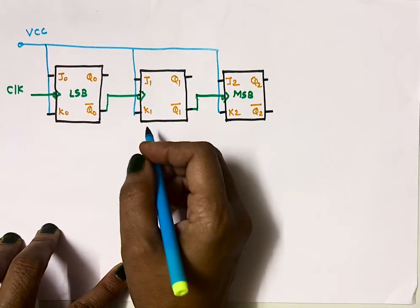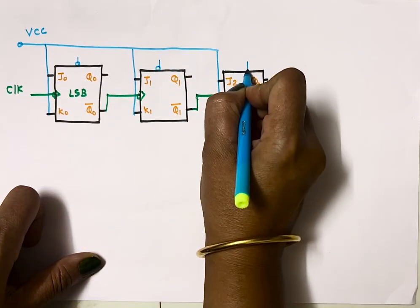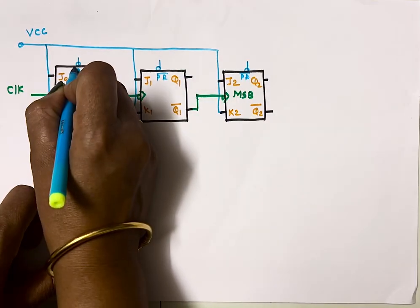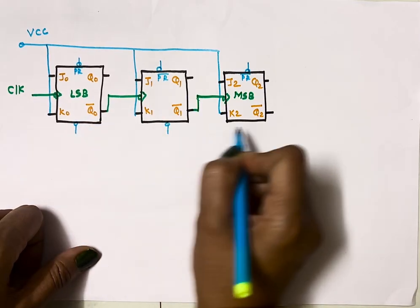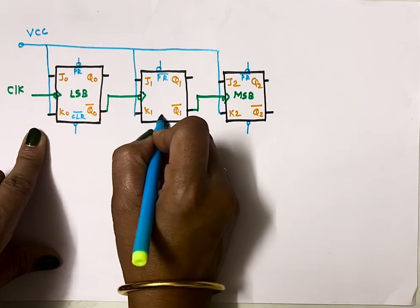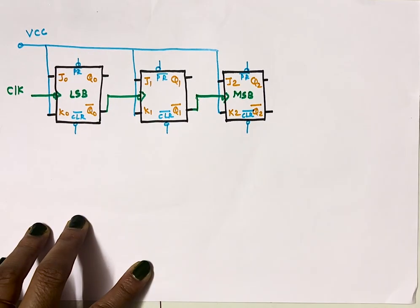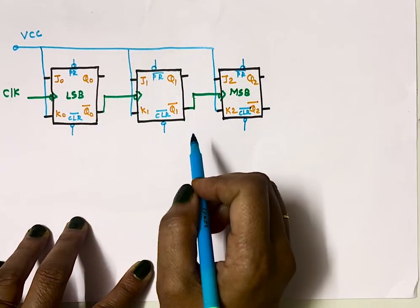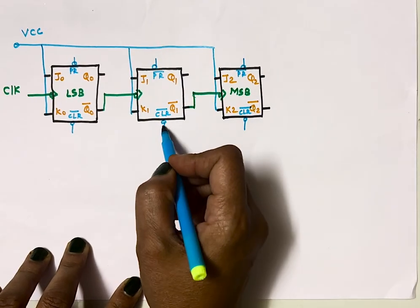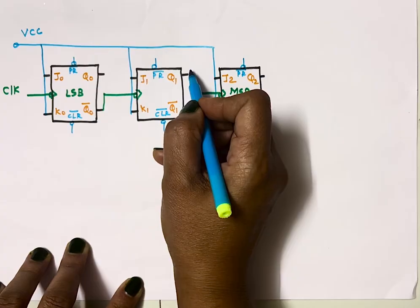Next, we need to use preset and clear inputs. The active-low bar or bubble indicates active-low. Preset and clear inputs are used to either set the output of the flip-flop to 1 or to make the output zero. They are active-low, meaning if clear receives 0 then the output becomes 0, and if preset receives 0 it sets the output to 1.